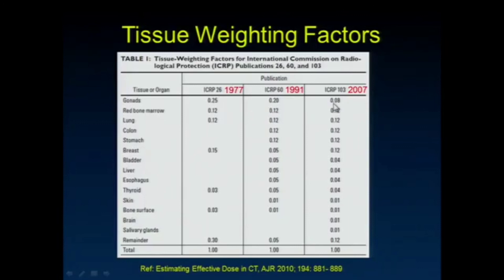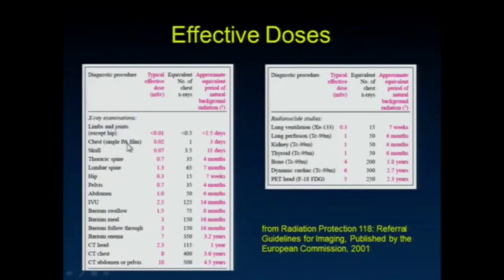The fact that these weighting factors have changed substantially over time indicates that effective dose is at best an approximation. For a chest x-ray: the gonads receive almost no radiation, so their 0.08 factor is multiplied by near-zero; the red bone marrow in the thoracic spine is multiplied by 0.12; the lung dose is multiplied by 0.12; the brain gets essentially zero dose, so 0.01 times zero. These are summed to get the effective dose for a chest x-ray.